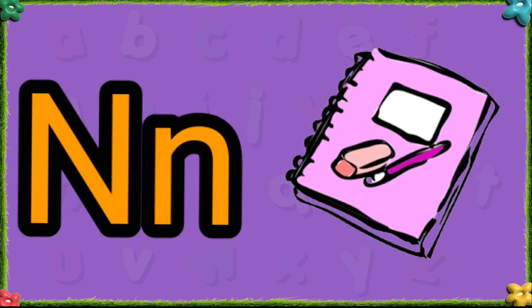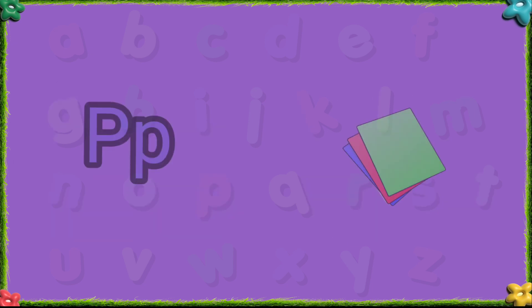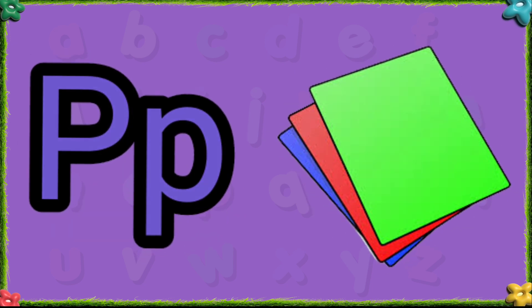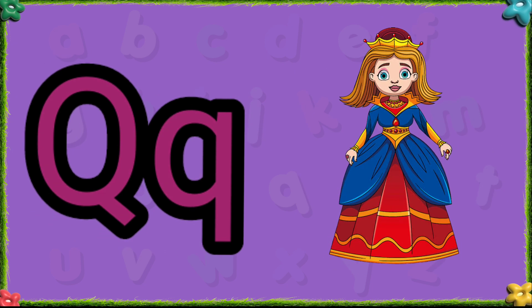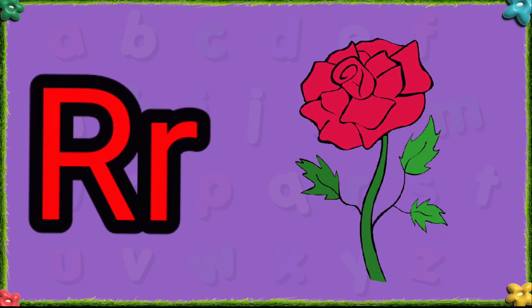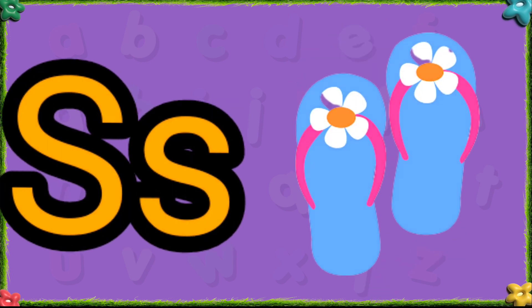N is for notebook. O is for omelette. P is for peppers. Q is for queen. R is for rose.